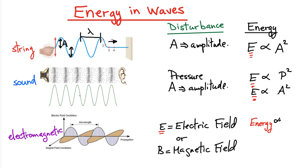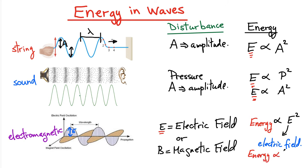Just remember: the energy stored in waves is always proportional to whatever the disturbance is in the system producing the wave, and the energy is always proportional to that disturbance squared.